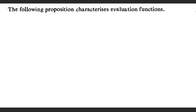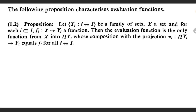The following proposition characterizes evaluation functions. It states that if {yi} where i element of I is a family of sets, capital X is a set, and for each i element of capital I, fi from x to yi is a function, then the evaluation function is the only function from x into product yi whose composition with the projection function pi_i equals fi for all i element of capital I. To prove this proposition, we need to show that the composition of the evaluation function with the projection pi_i is equal to fi, and we need to show that this is the only function having this property.